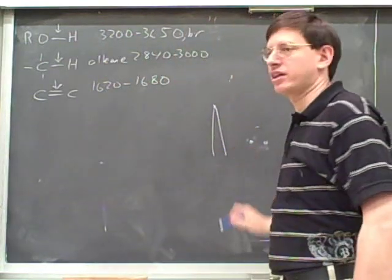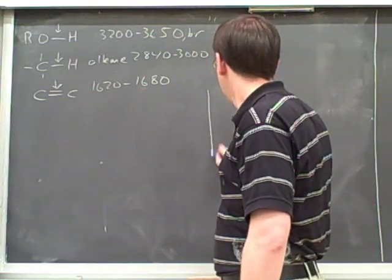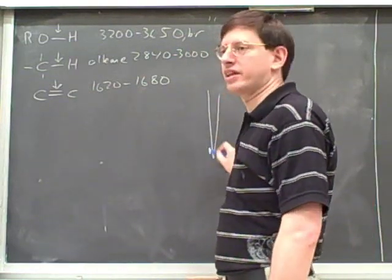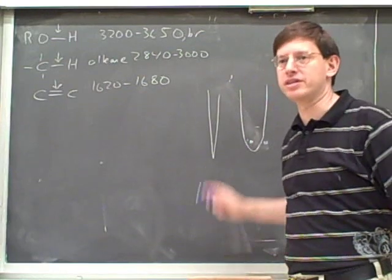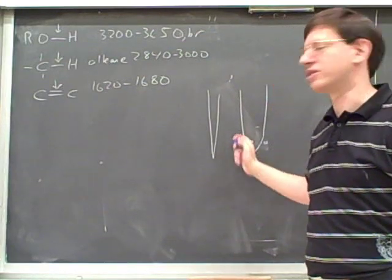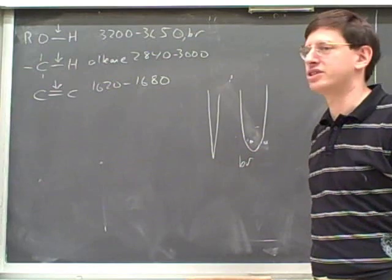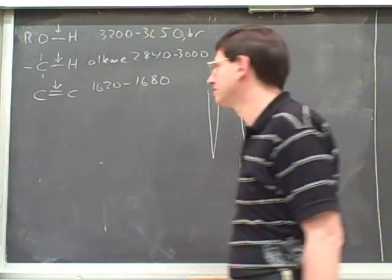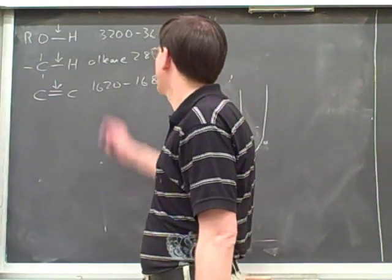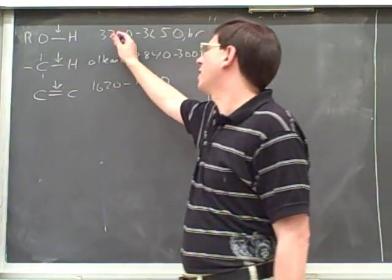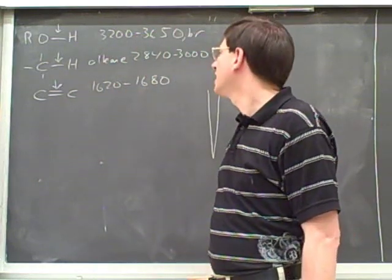Broad means that instead of looking like spikes, they're more rounded — broad means more rounded. That's a result of hydrogen bonding. So we would expect alcohol bonds to be in this range and relatively broad.